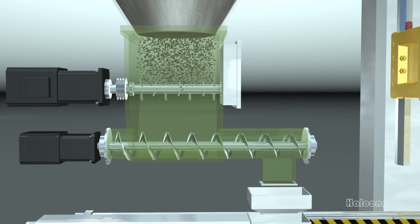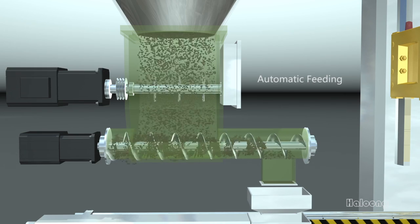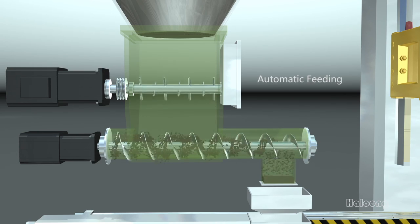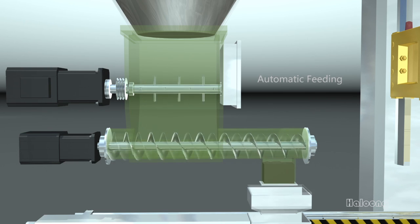The raw material comes out from the storage vessel after the rotor mixing, then transported by the spiral feeding device into weighing vessel for automatic weighing.